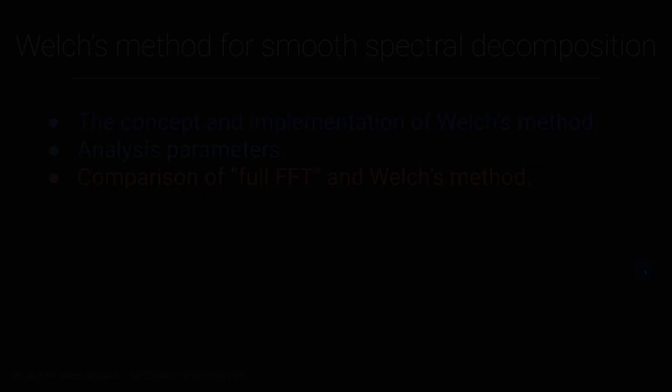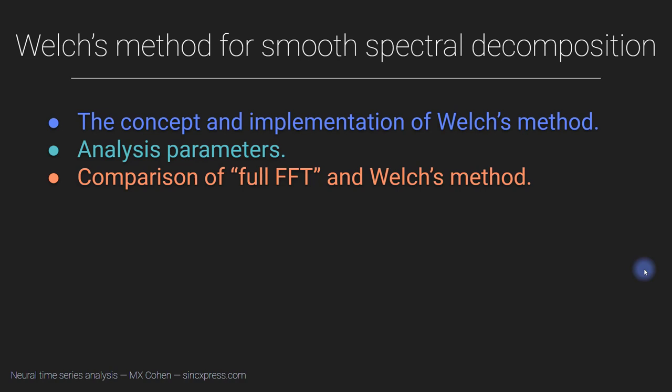In the previous several videos, I've discussed non-stationarities — signal non-stationarities, what they mean, how they manifest — and I showed you that signal non-stationarities can make the results of the Fourier transform difficult to interpret visually. So one of the solutions for dealing with signal non-stationarities is something called Welch's method. It also gives a smoother, easier-to-interpret result.